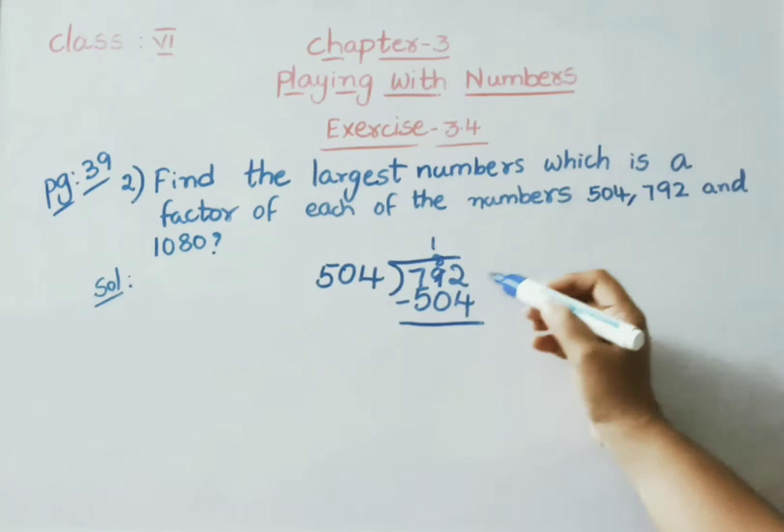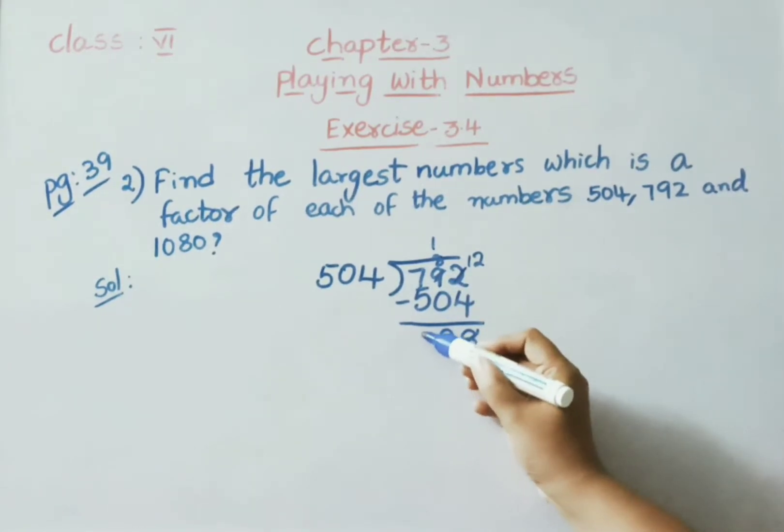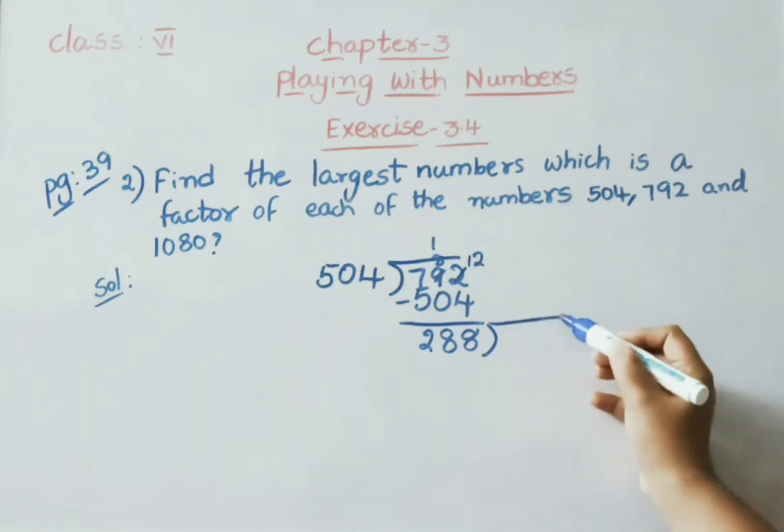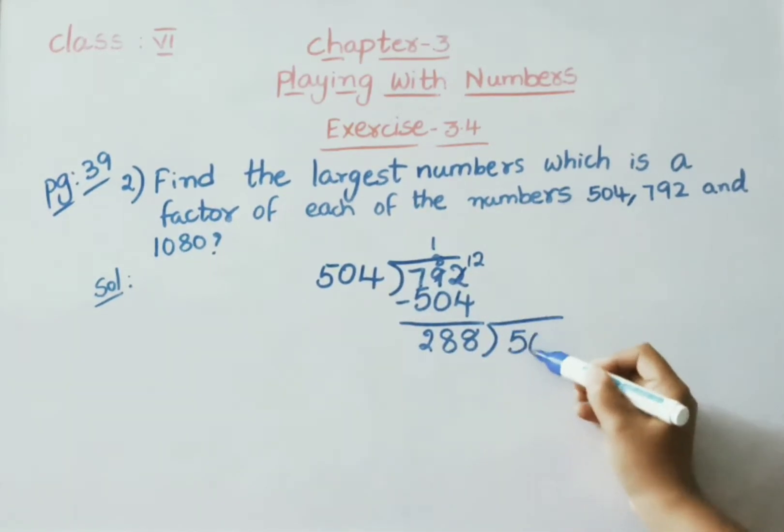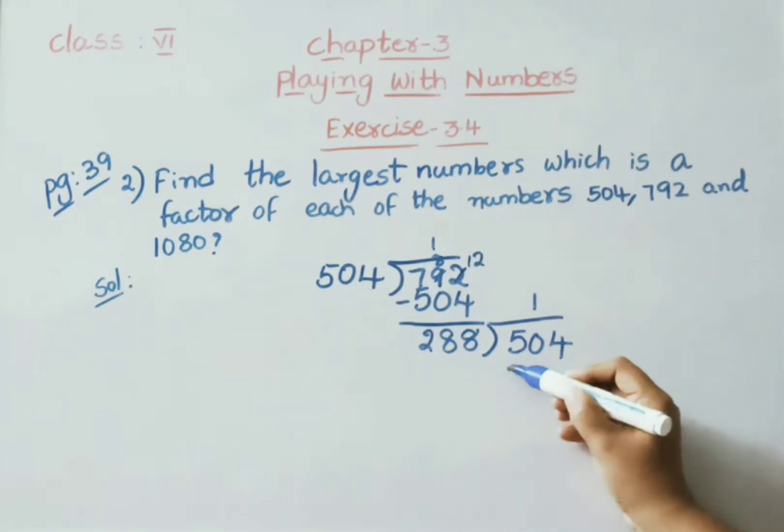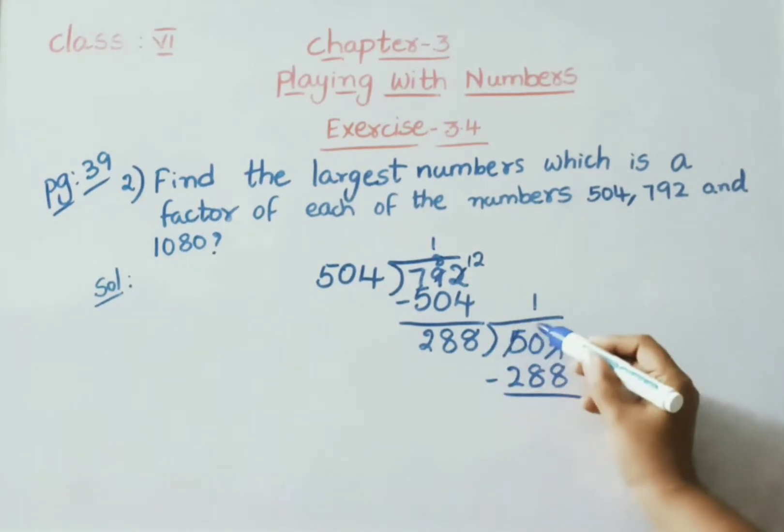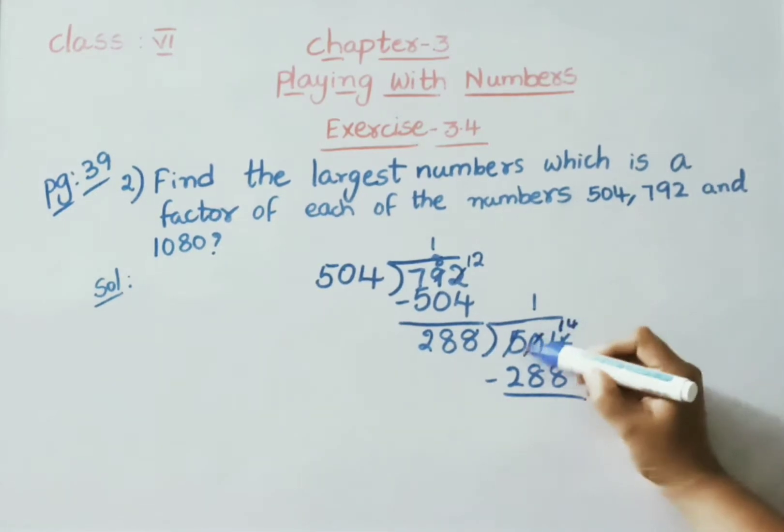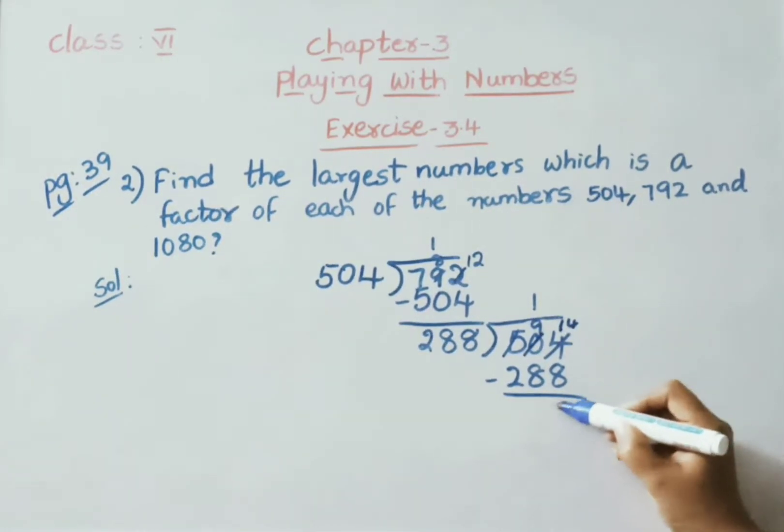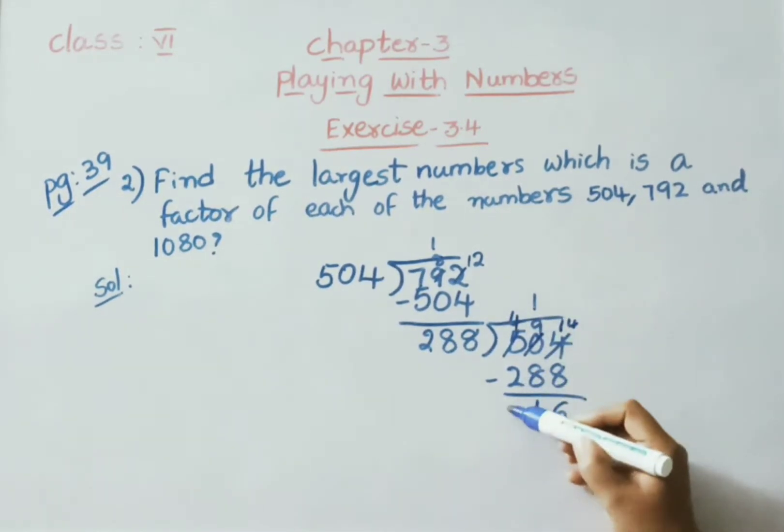Borrow means here 8, it becomes 12. 12 minus 4 is 8, 8 minus 0 is 8, 7 minus 5 is 2. With this 288, we need to divide the previous divisor 504. 288 ones are 288. Again, borrow from this 5. 4 becomes 14, this 0 becomes 9. 14 minus 8 is 6, 9 minus 8 is 1, 4 minus 2 is 2.